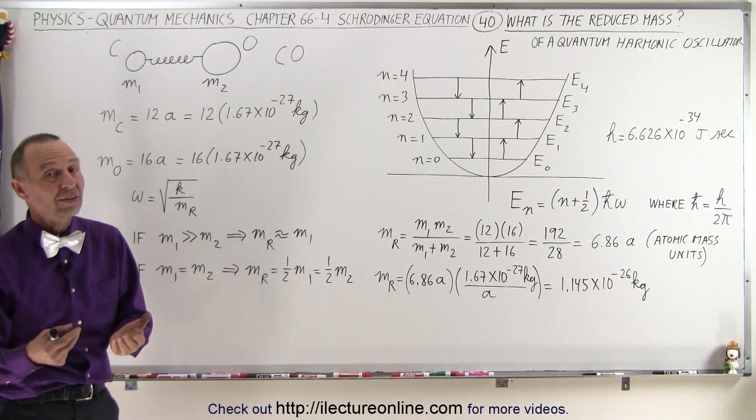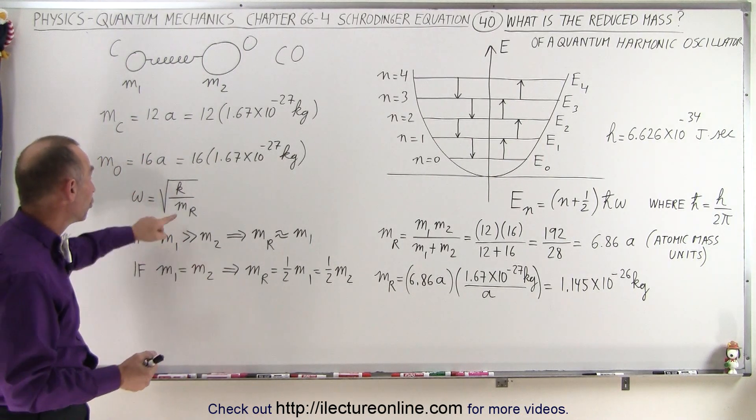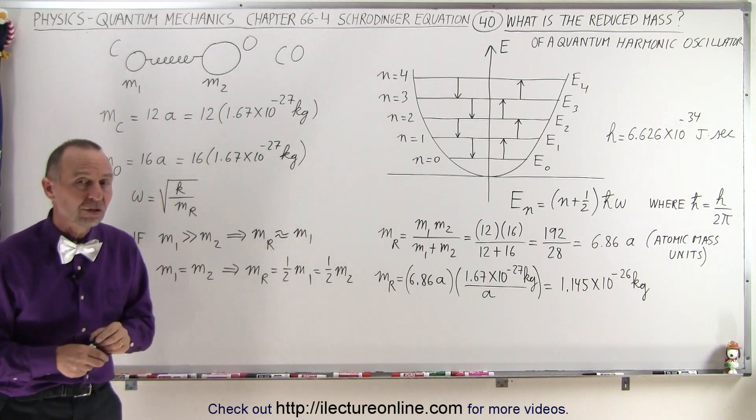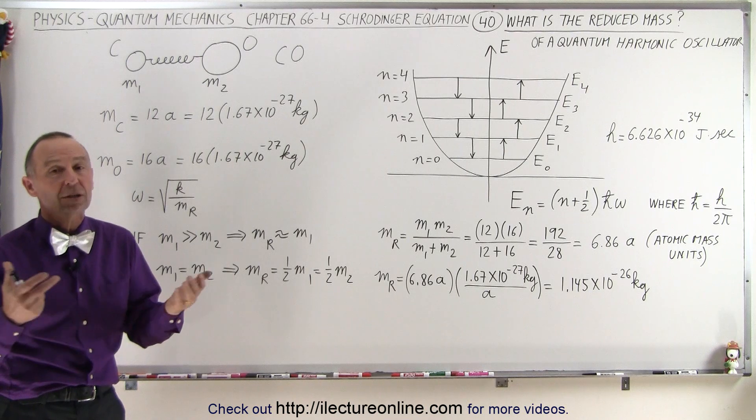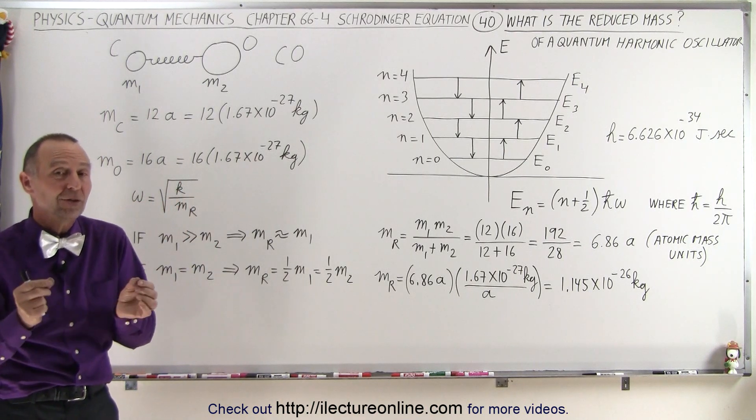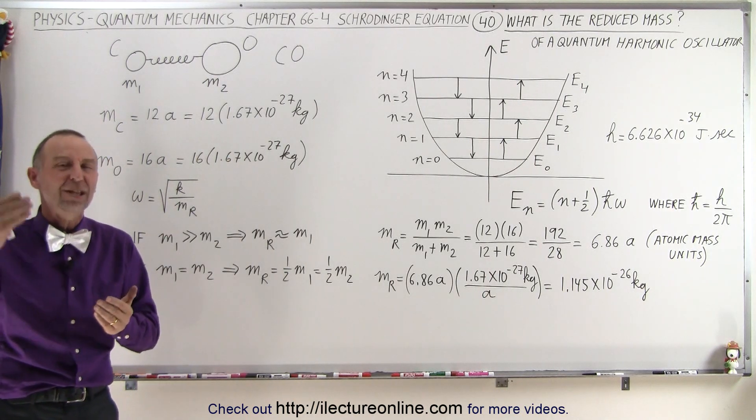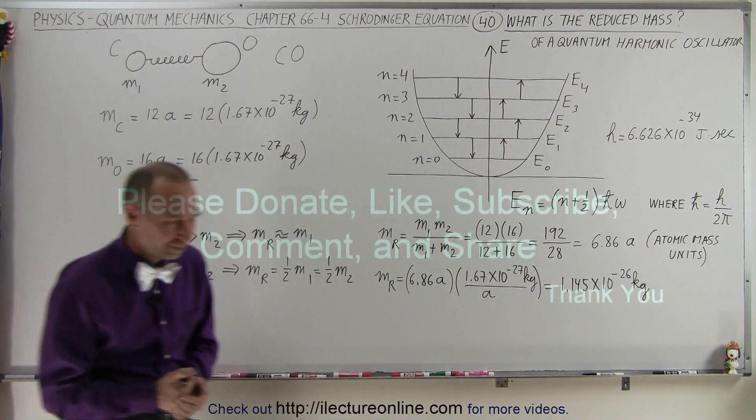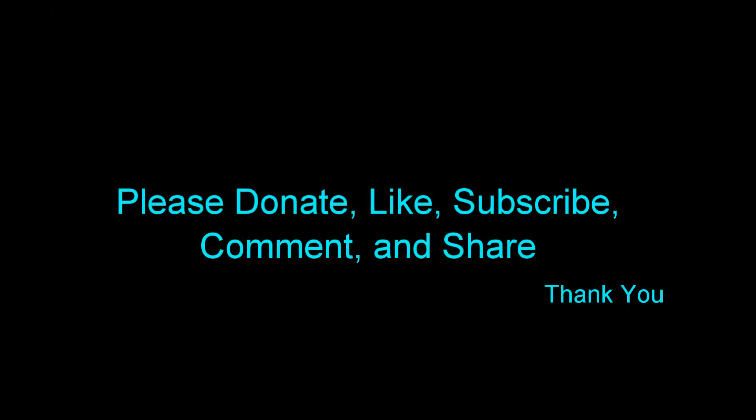And that's what we mean by the reduced mass, and it's one big component in determining the angular frequency of oscillation of that simple harmonic oscillator, or in this case, the quantum harmonic oscillator, because it can only have quantum values, not continuous values. That's the big difference between the two. Thank you very much.